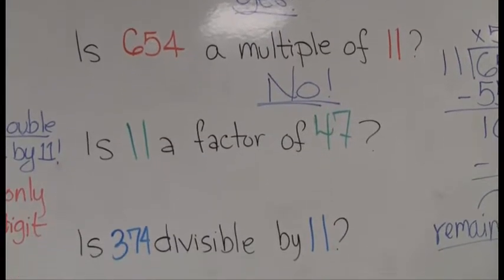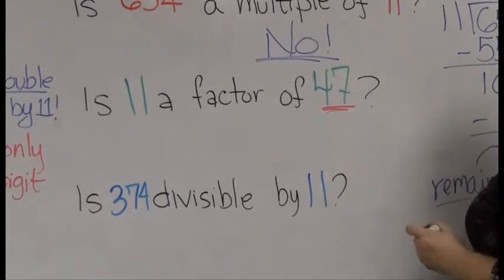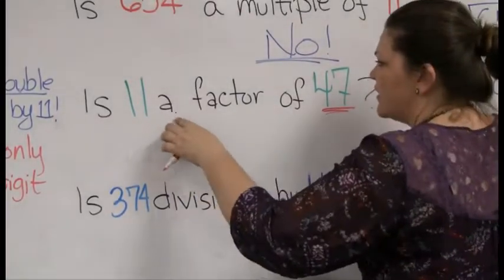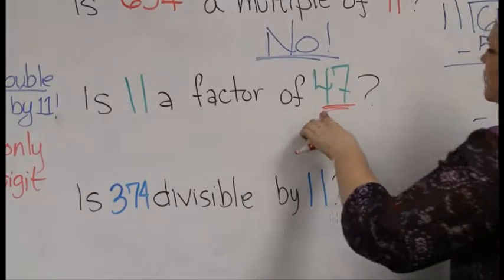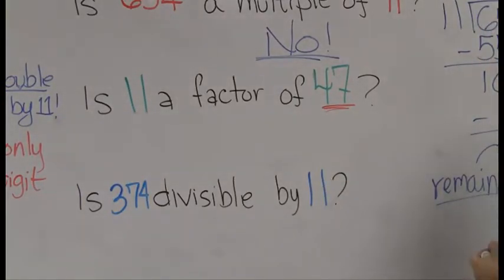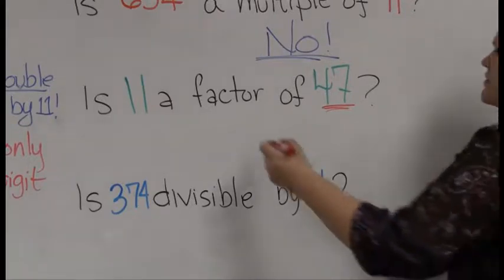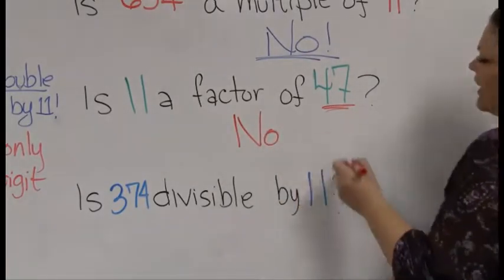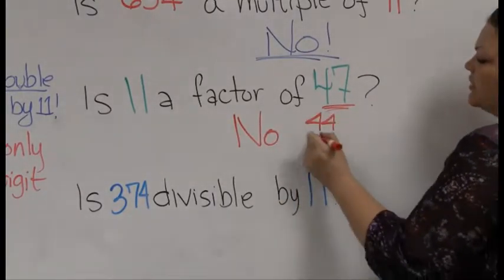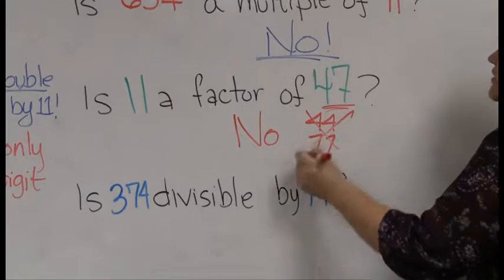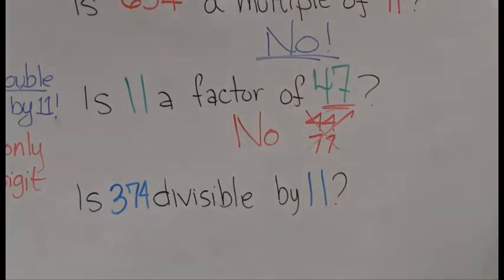And so 654 isn't a multiple of 11. Now luckily our next problem involves a two-digit number. So it says, is 11 a factor of 47? Nice, simple problem here because it is two digits. I look right at it and I say these are not repeated double digits. And so the answer is no. It would have to be like 44 or 77 to say there was an 11 in there.